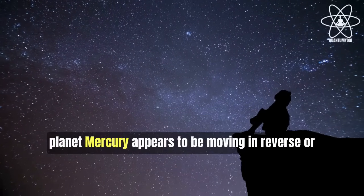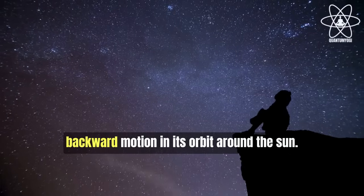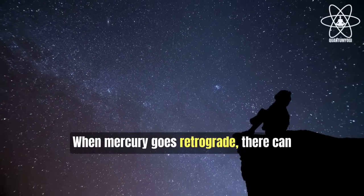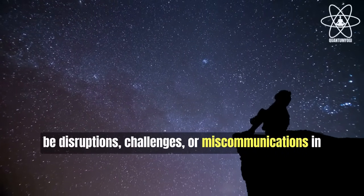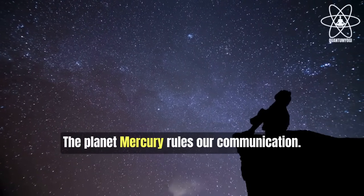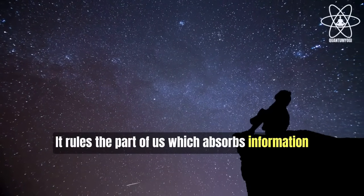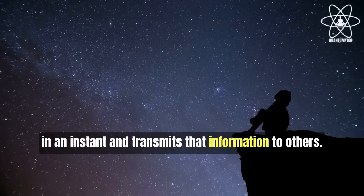Now pay very close attention. Mercury retrograde is a phenomenon that occurs when the planet Mercury appears to be moving in reverse or backward motion in its orbit around the sun. When Mercury goes retrograde, there can be disruptions, challenges, or miscommunications in certain areas of life. The planet Mercury rules our communication. It rules the part of us which absorbs information in an instant and transmits that information to others. When it retrogrades, the flow of energy is reversed.